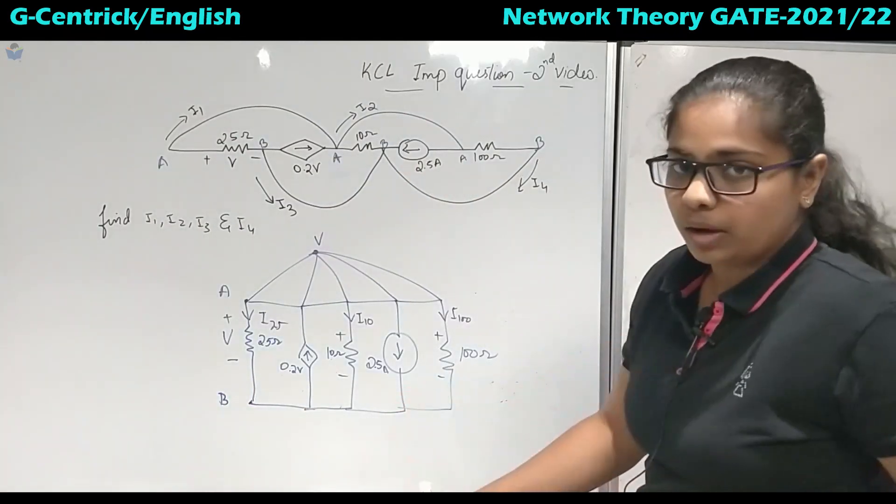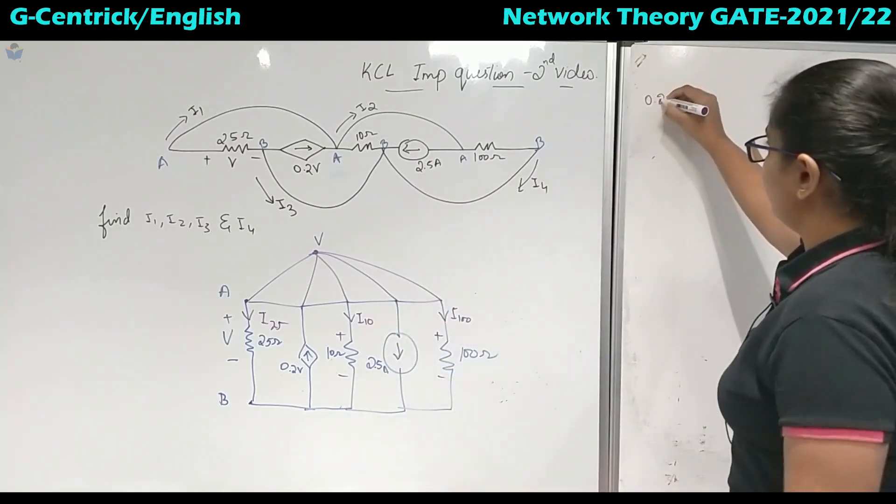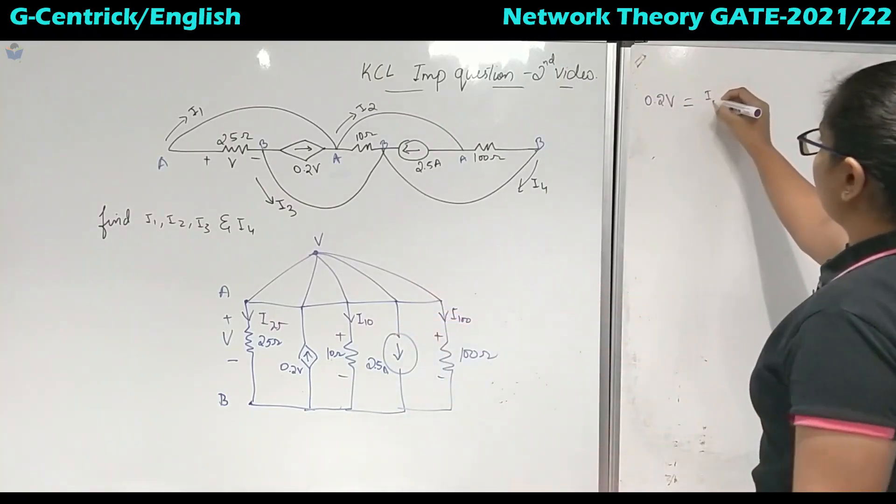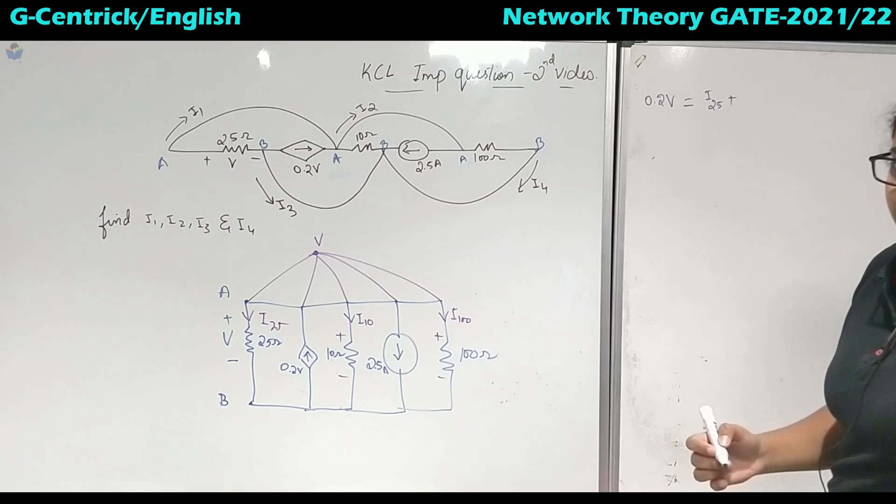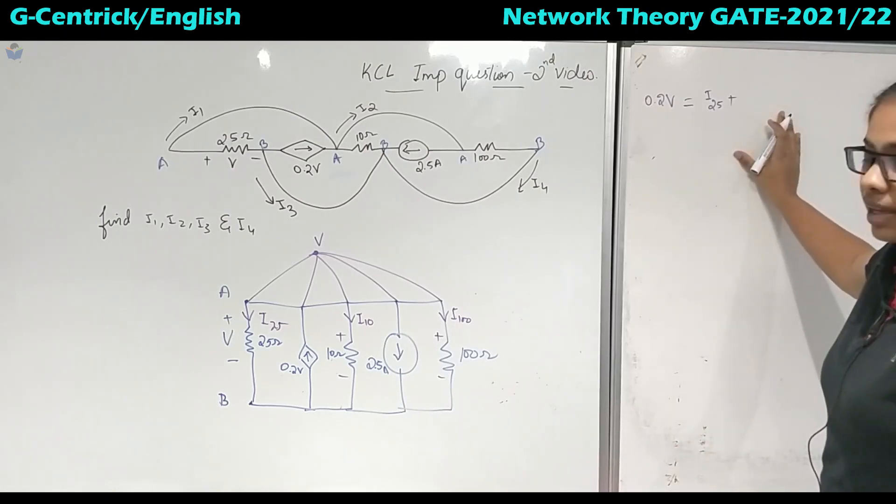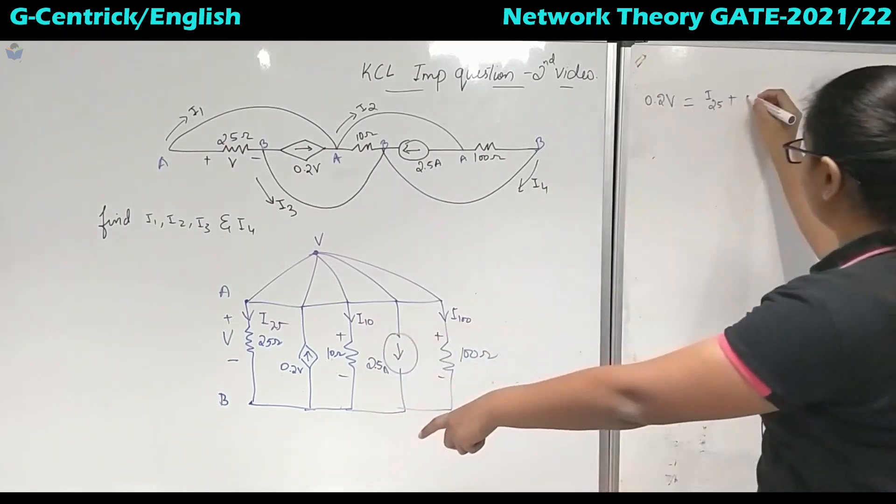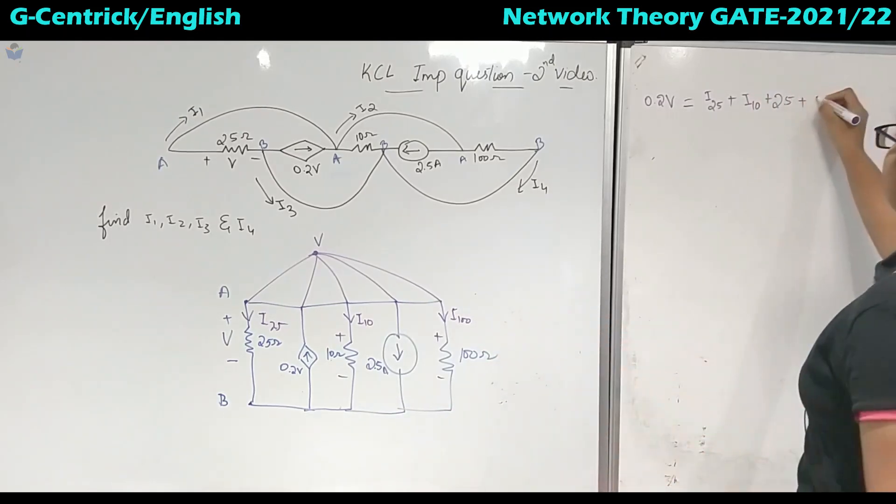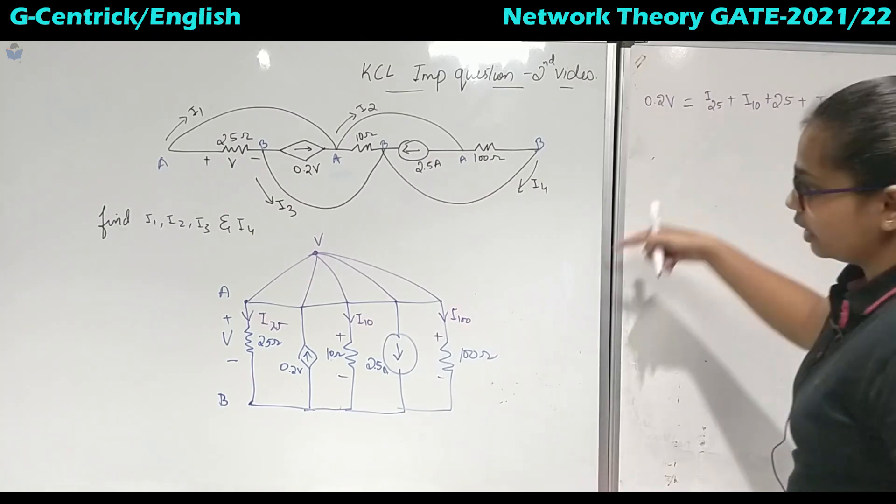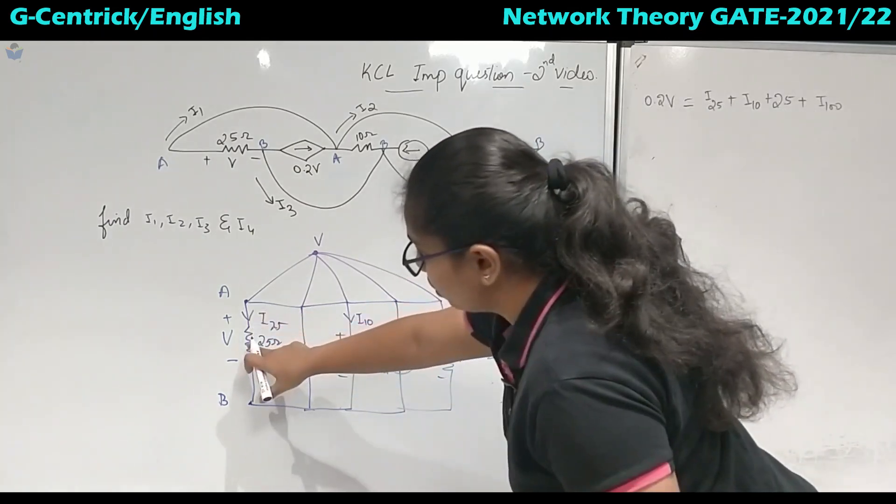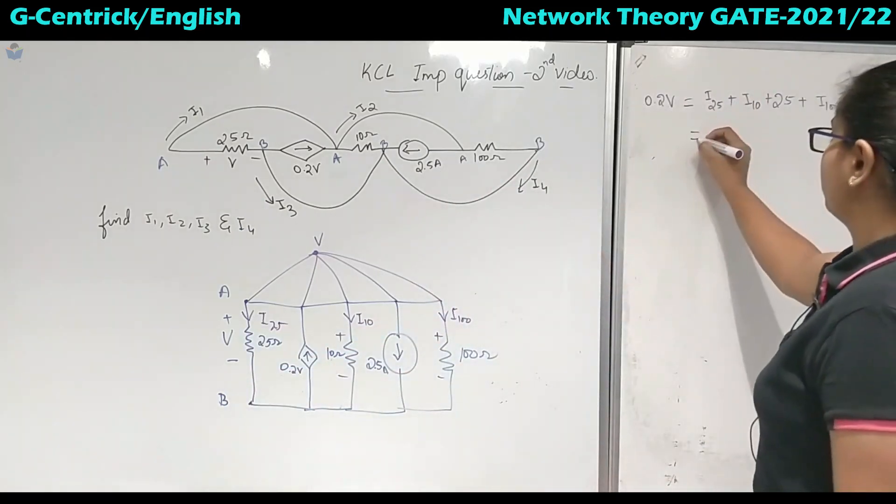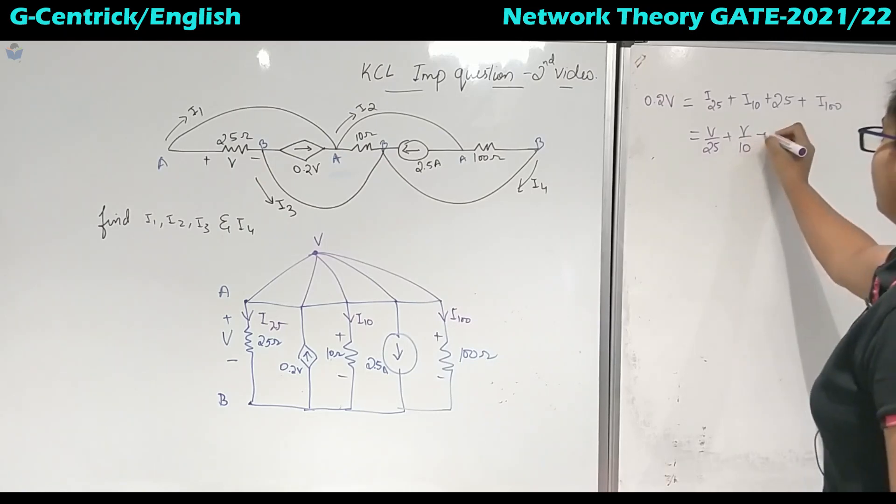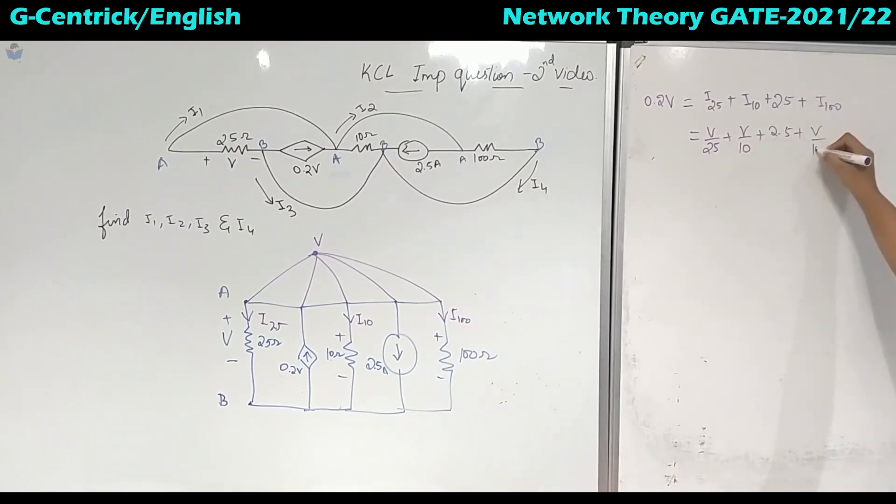So when I apply KCL at that node, I will get incoming equal to outgoing. So incoming is only one, that is 0.2V, which will be equal to I25 plus, basically KVL is nothing but the writing of KCL plus Ohm's law. So this is I10 then plus 2.5 and plus I100. Now this I25, I can write it as V by 25. So V by 25 similarly for the I10, it is 2.5 then V upon 100.